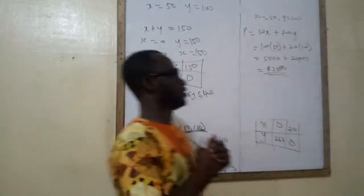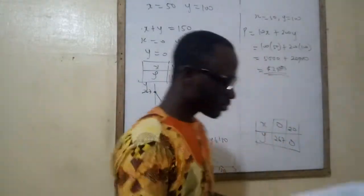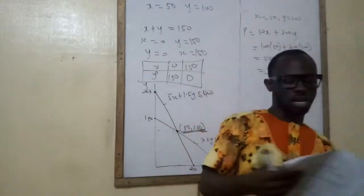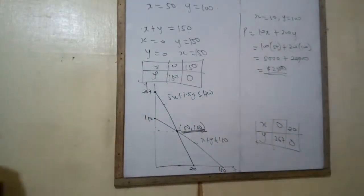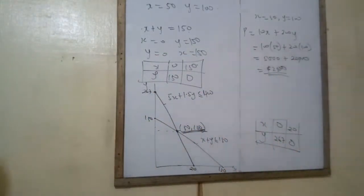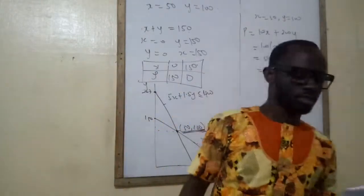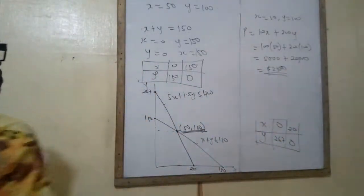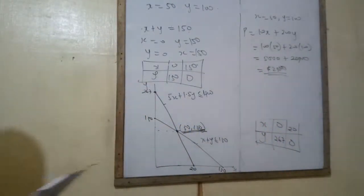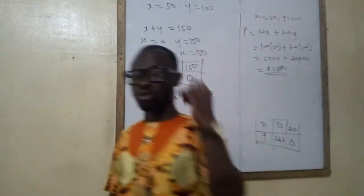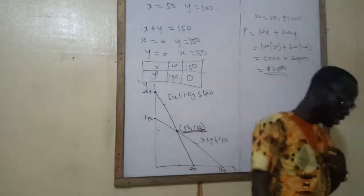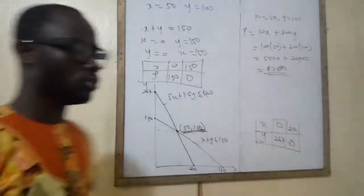So that is the idea about linear programming. Any questions? I have something here called a classroom trial. I'm giving you five minutes. Write out the constraints and the objective function, and let me see. Write the objective function, also write the constraints and the non-negativity, and let's see what you get.